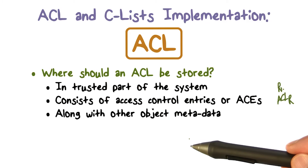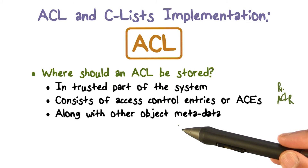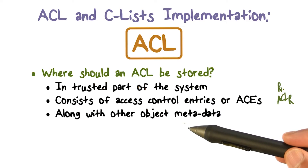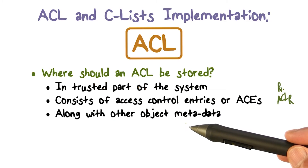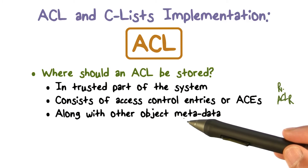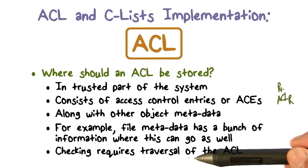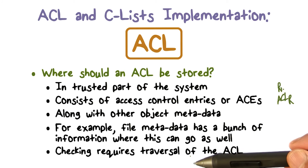We're going to do an example for a Linux-like system — Unix systems — looking at how file system access control is implemented. We're going to see that the ACL information actually gets stored in the same place where metadata about a file is stored in the operating system.